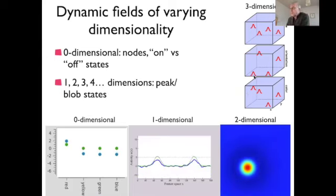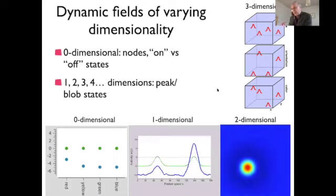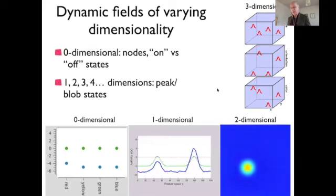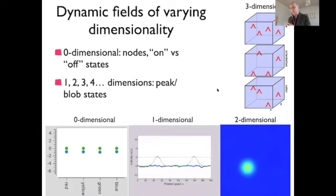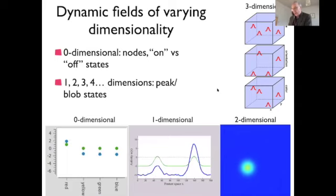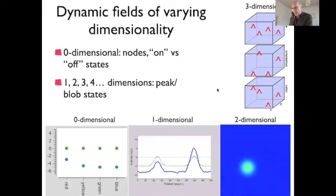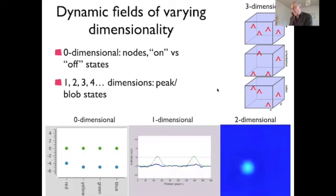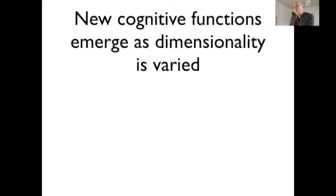As a first approximation, by just scaling the dimension nothing special happens yet. If you can generalize the notion of localized input and locally excitatory, globally inhibitory kernels to higher dimensions, there is no problem. It is computationally costly to simulate those fields, which perhaps reflects a problem the brain might have, and I will talk about the scaling of certain properties with number of dimensions in a little while.